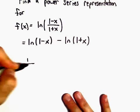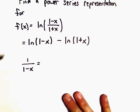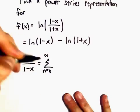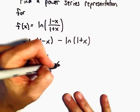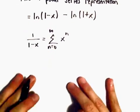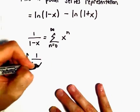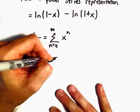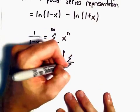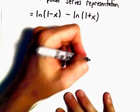So, 1 over (1 minus x) we can write as the series n equals 0 to infinity of x raised to the n power. The observation is, if we integrate 1 over (1 minus x), we'll integrate the right side as well: summation n equals 0 to infinity of x raised to the n power.